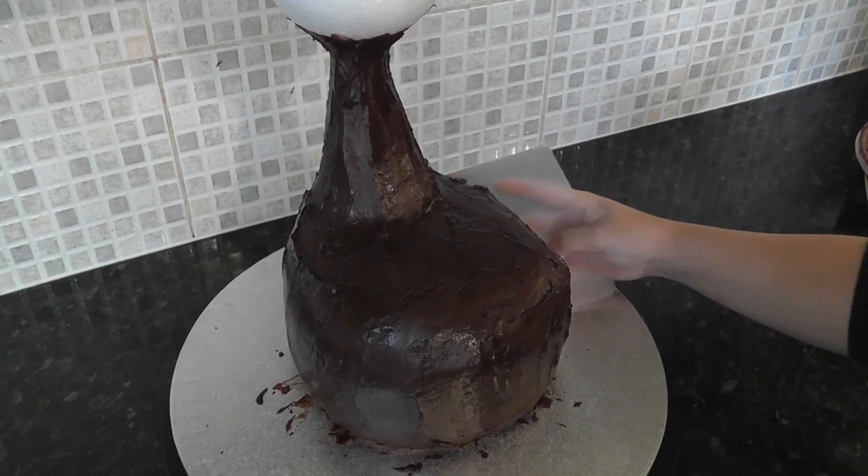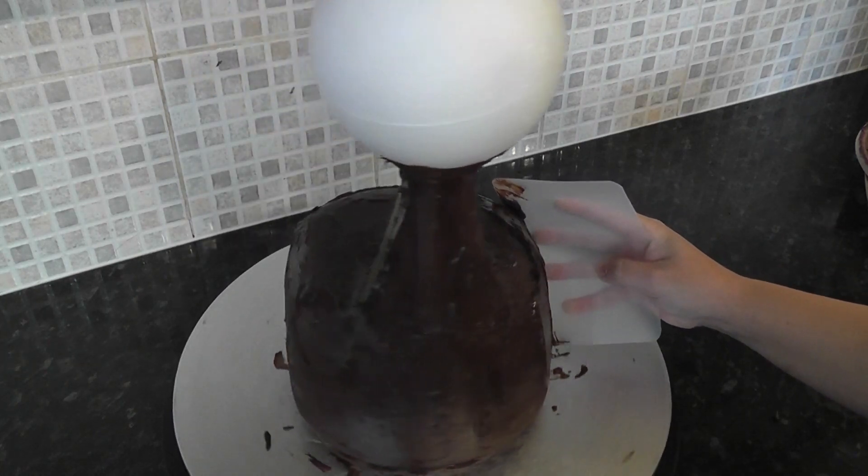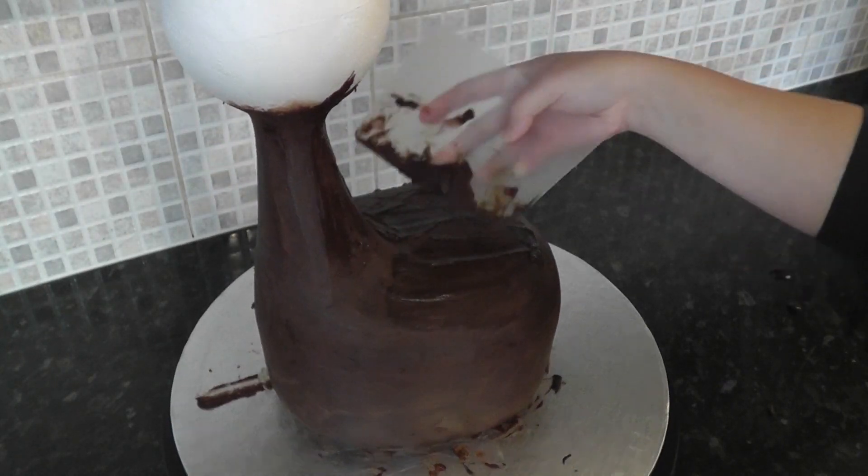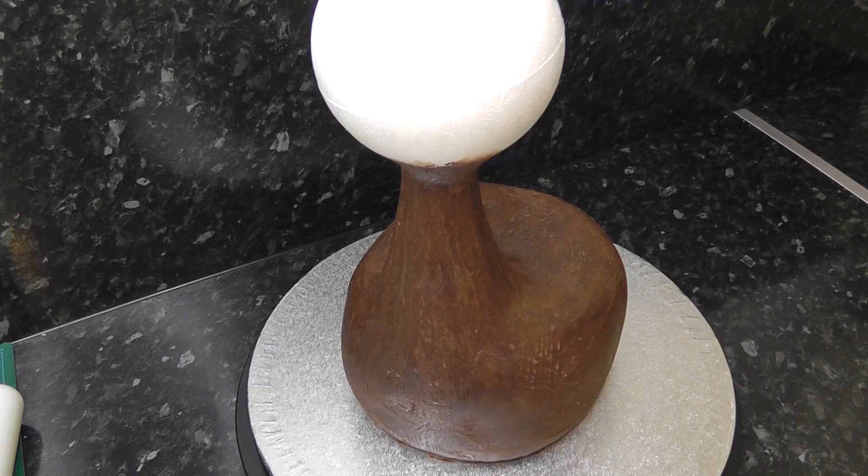Once that sets, add a second coat and start to smooth it out with an acetate smoother which will bend to the contours of the curves.